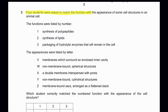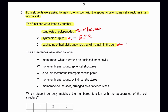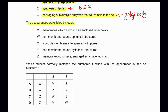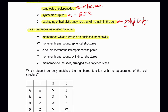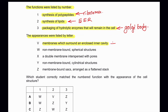Question 3: Four students were asked to match the function with the appearance of some cell structures in an animal cell. The functions listed: 1) Synthesis of polypeptides — done by ribosomes; 2) Synthesis of lipids — produced by smooth endoplasmic reticulum; 3) Packaging of hydrolytic enzymes that remain in the cell — done by the Golgi body. The appearances listed: V — membrane surrounding an enclosed inner cavity, which could be a vesicle or smooth endoplasmic reticulum.